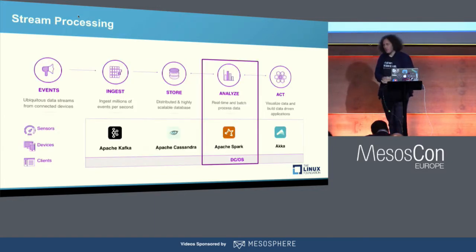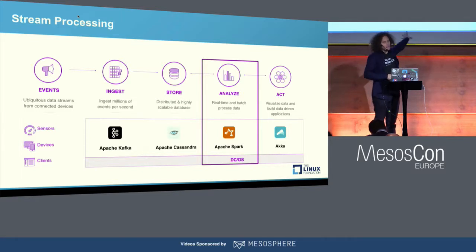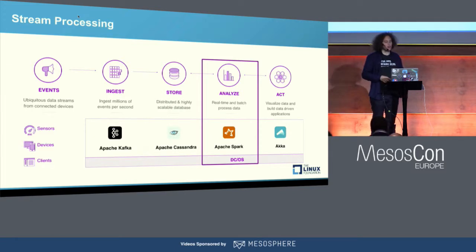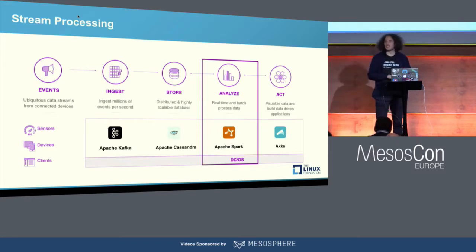For me, the SMACK stack comes from this individual name. The S actually stands for Spark. The M stands for Apache Mesos, as we hear at MesosCon. The A stands for Akka. C stands for Cassandra. And K is representing Kafka in our case. For me, if I'm talking about the SMACK stack, it's not so much about those individual technologies making up the name, because in each of those layers we have a different number of options to implement them differently.